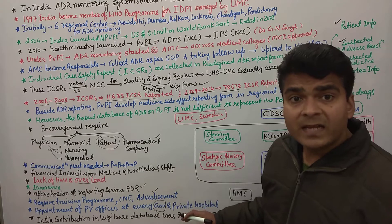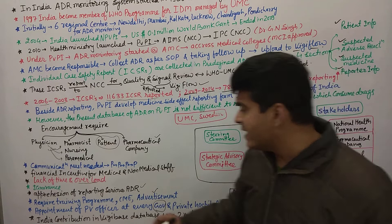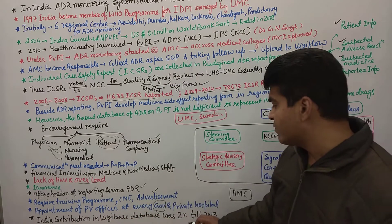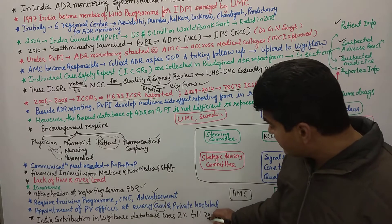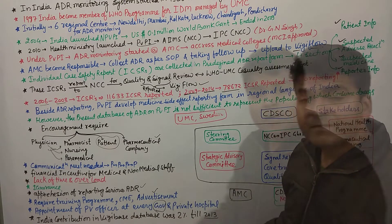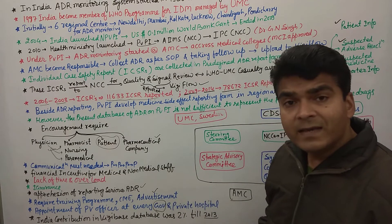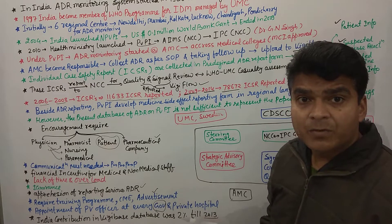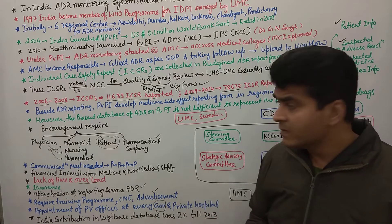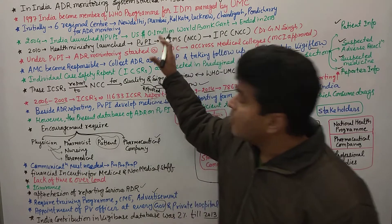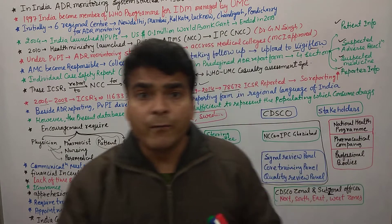India's contribution to the VigiBase database was only two percent until 2013, which illustrates how limited reporting is relative to the country's population and drug consumption. This is how the Indian national pharmacovigilance program was established.